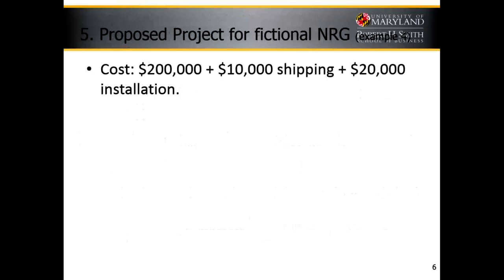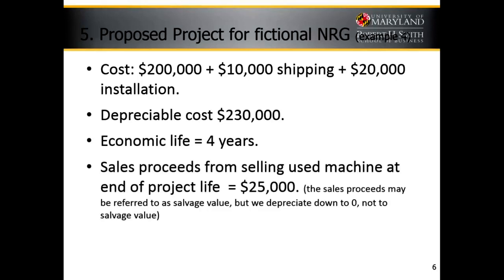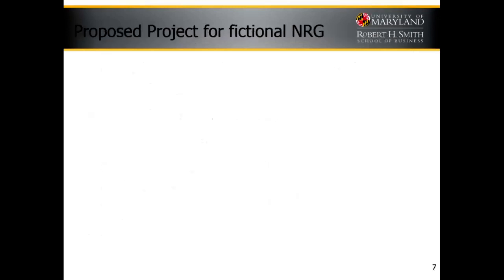Here's another fictional project. It's going to cost $200,000 for a CNC machining station, plus another $30,000 to ship and install — so we'll depreciate all of that. Economic life is four years. At the end of the project life, we can sell that used machine for $25,000. Some people refer to that as salvage value, but we will be depreciating down to zero, not to salvage value, so I like to call it sales proceeds of the used machine.